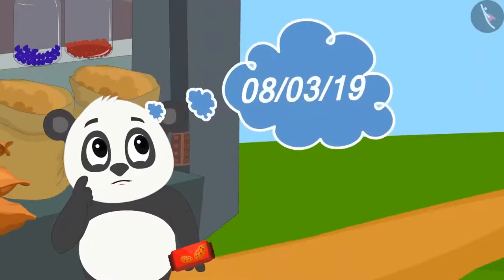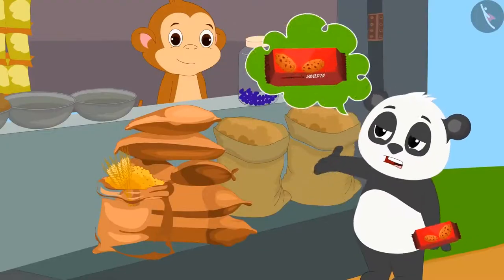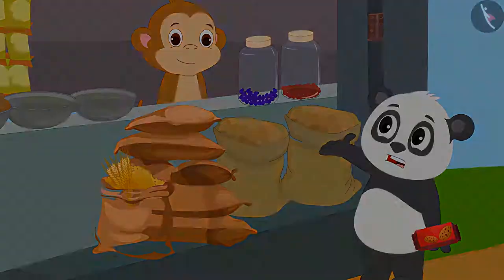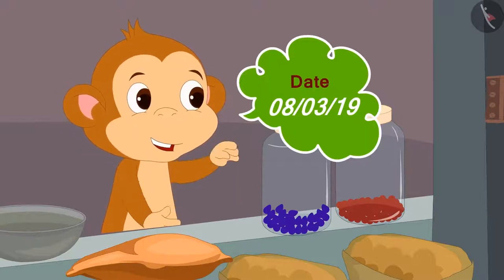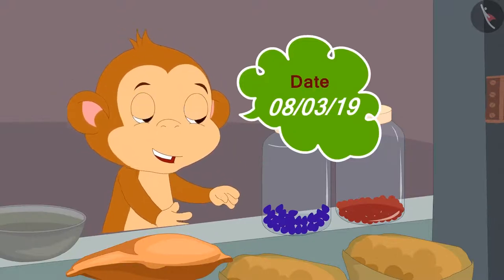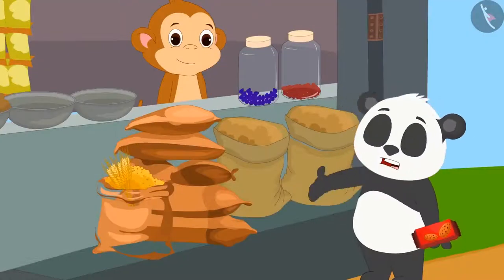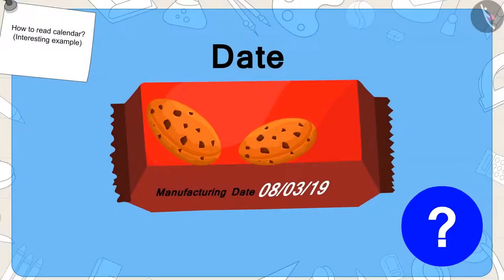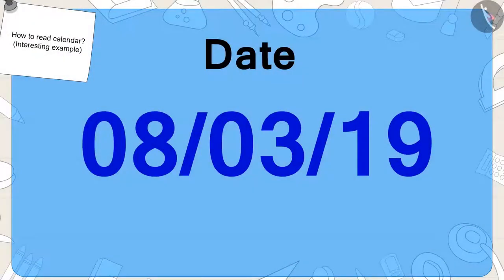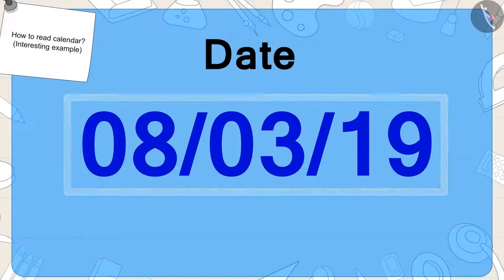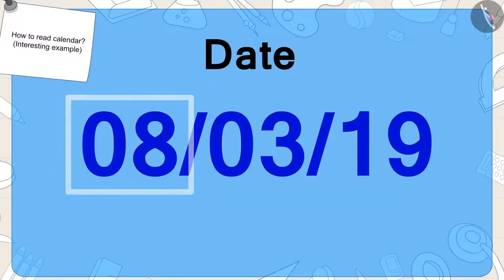He could not understand anything. He immediately asked Babban, what are these numbers? Babban told him that this number is the date on which this packet of biscuits was manufactured. Golu asks Babban how he came to know what date it is. Children, have you seen a date written like this on something? We can write any date in this way. These numbers indicate which date of the month it is.